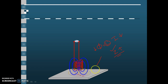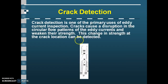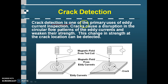These things you know from our previous video. Now, how by this eddy current sensor we can detect cracks — that is, crack detection by eddy current sensor. Crack detection is one of the primary uses of eddy current inspection. Cracks cause a disruption in the circular flow pattern of the eddy current, and this is the main concept. We can detect the change in strength at the crack location.